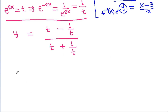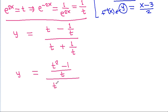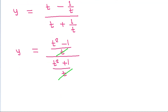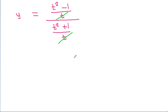So y = (t - 1/t) / (t + 1/t). The numerator is (t² - 1)/t and the denominator is (t² + 1)/t, and t gets cancelled. So y = (t² - 1) / (t² + 1).